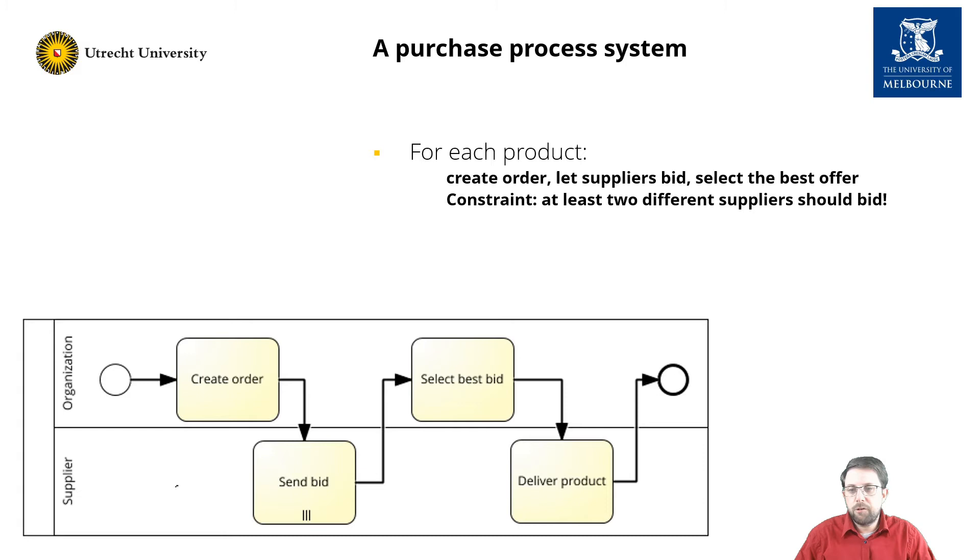As an example, consider the following purchase process system for some organization. If an employee wants to order a product, a purchase order needs to be created. Next, a tender starts. At least two suppliers need to send a bid on the order before the organization selects the best bid. That supplier then receives the order and delivers the product. The process model is shown below as a BPMN model.